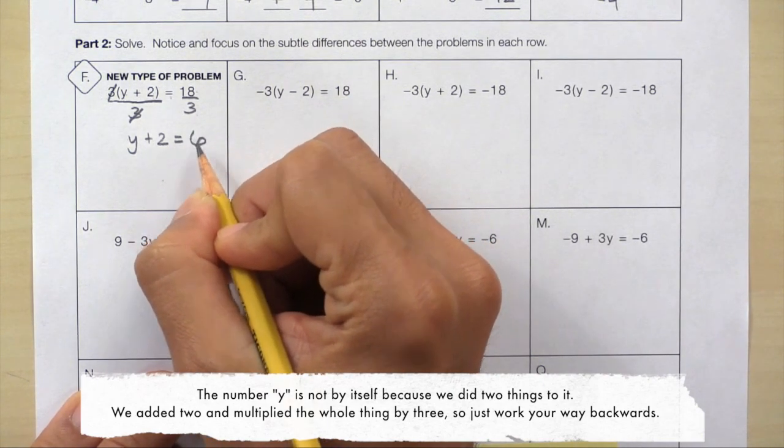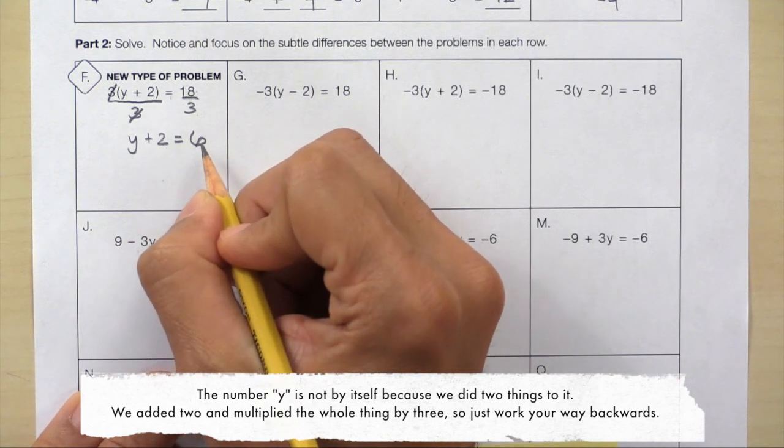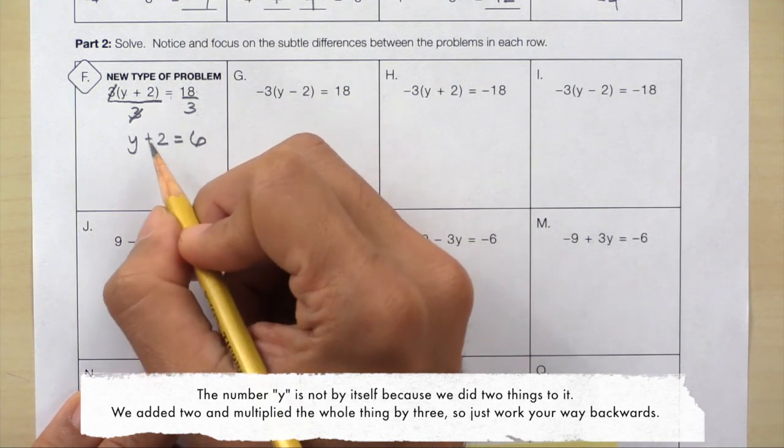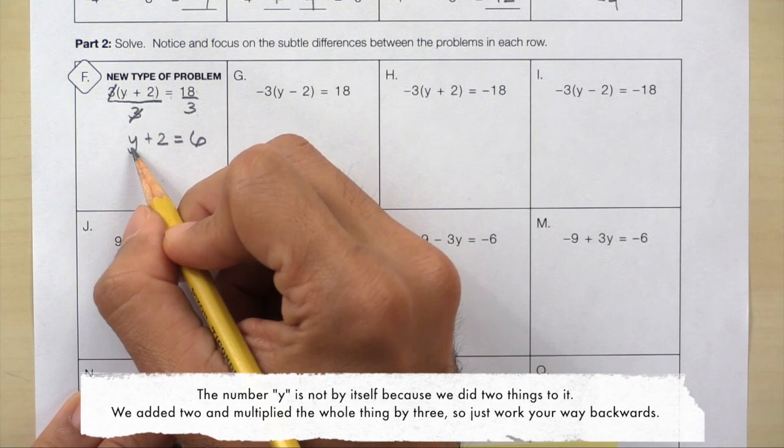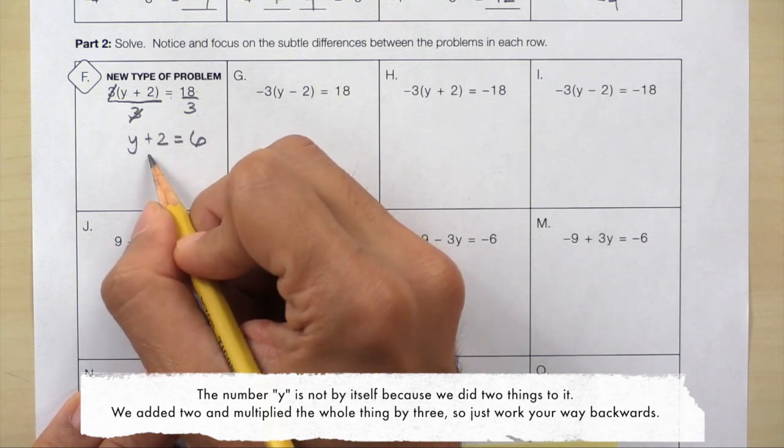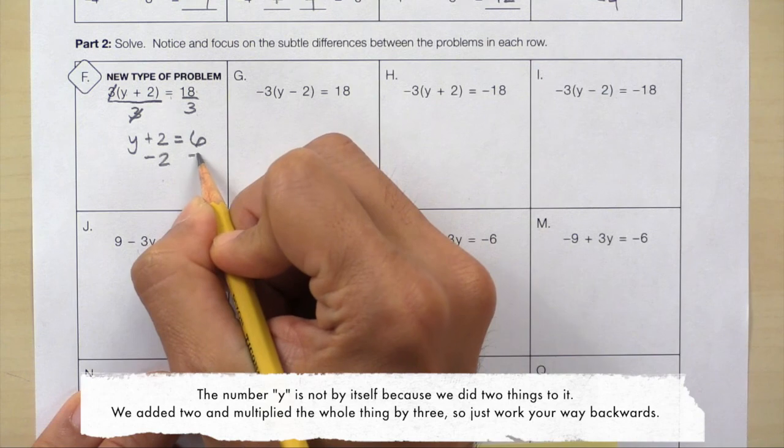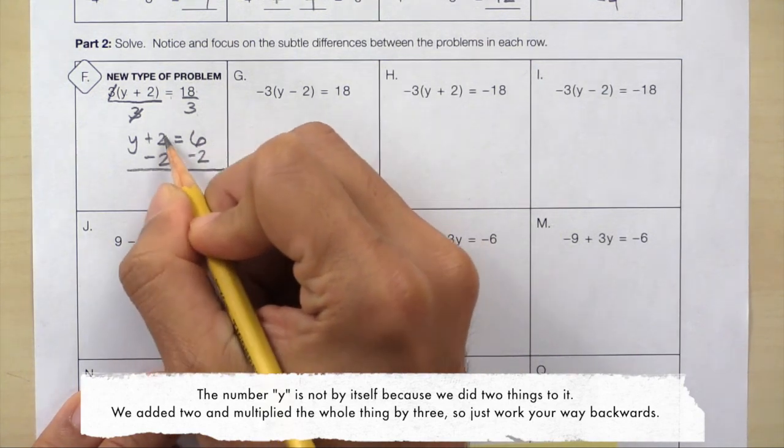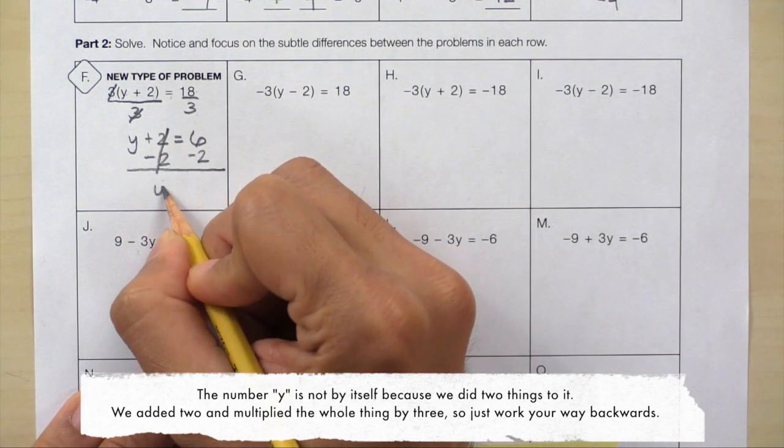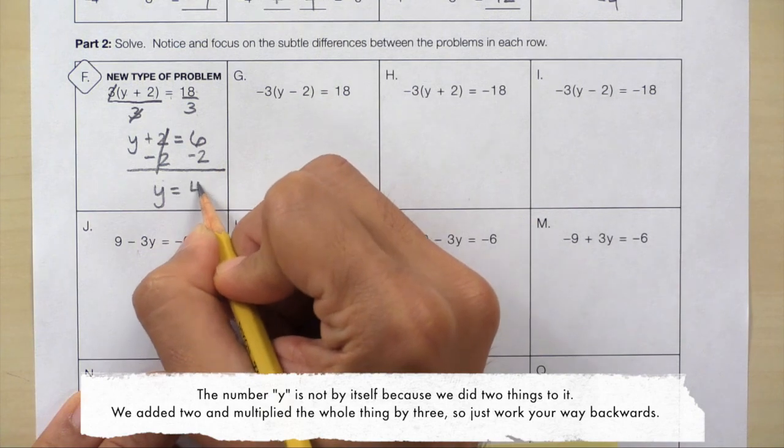So far we have y plus 2 equals 6. Y is still not by itself. It's with plus 2. So subtract 2. And now we have y equals 4.